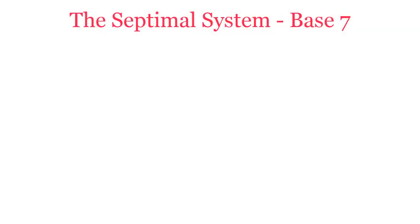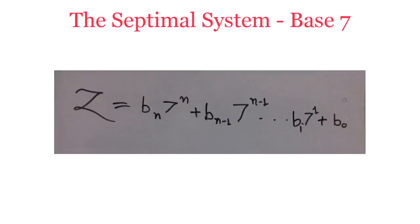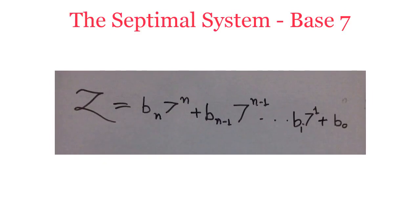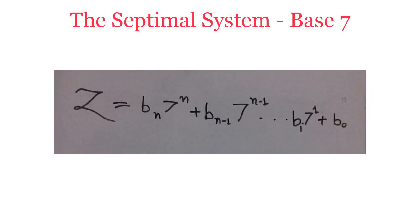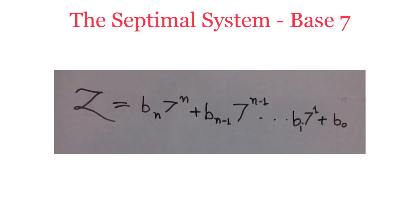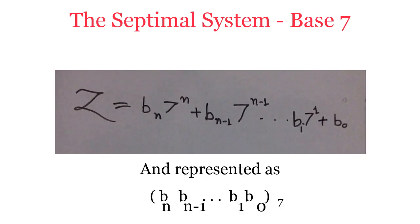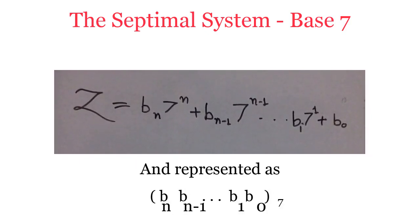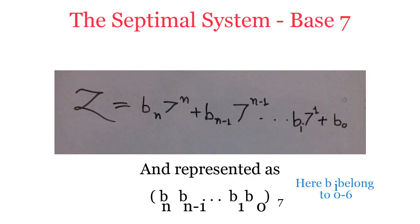For example, a septimal system of base 7 could be used. In such a system, an integer could be expressed as z equals b_n times 7 to the power n plus b_(n-1) times 7 to the power n minus 1, dot dot dot, b_1 times 7 plus b_0, and represented as b_n, b_(n-1), dot dot dot, b_1, b_0 base 7. Here, b_i are the digits from 0 to 6.